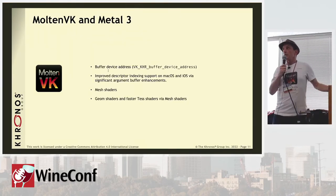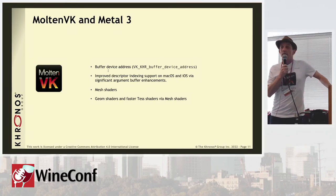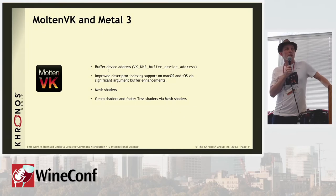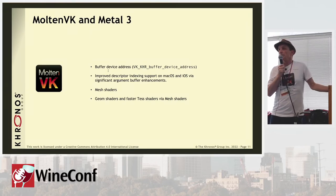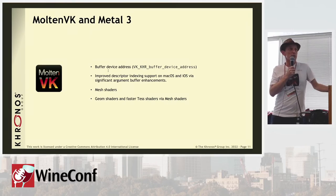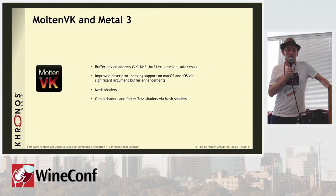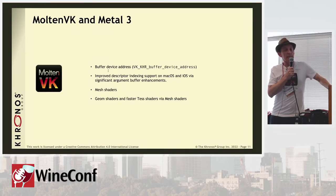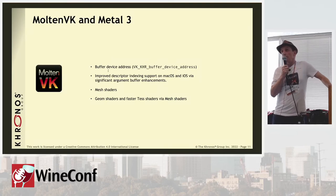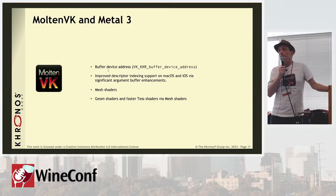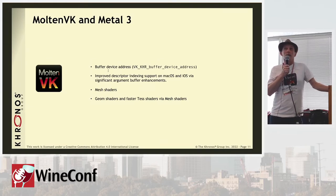We've gotten a bunch of requests about Metal 3. Metal 3 is a significant update. One critically important addition is buffer device address, so we can now support the buffer device address extension — you can pass pointers into shaders. Also related is a redefinition of how Metal handles argument buffers, which will allow us to improve our descriptor indexing support. Metal 3 also introduced mesh shaders and enhanced ray tracing.